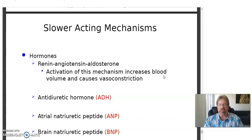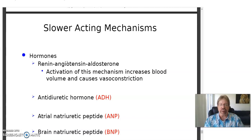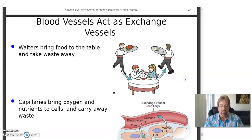A slower-acting mechanism involves hormones. The renin-angiotensin-aldosterone system is in the kidneys. The kidneys have a big stake in blood pressure because the higher the blood pressure, the more glomerular filtration, the higher the glomerular filtration rate. Aldosterone manages salt and is in the adrenal cortex. Antidiuretic hormone from the posterior pituitary helps adjust how much water we're getting rid of. Just be familiar with those two.